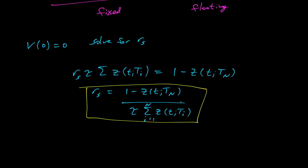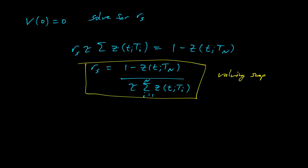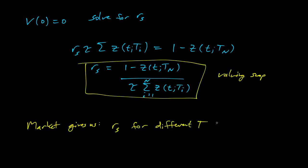That's how to value a swap. The market actually gives us many different R_s values for different T values — for lots of different time periods and numbers of payments, we can see what fixed interest rates the swaps are trading for. From there we can work backwards to get the yield curve.